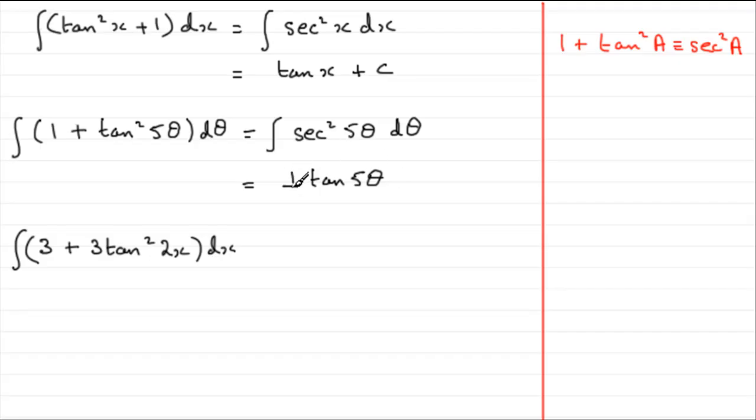But you'd need to multiply it by a fifth so that a fifth of 5 sec squared theta becomes sec squared 5theta. So I hope you got that. And then that's plus the constant of integration.